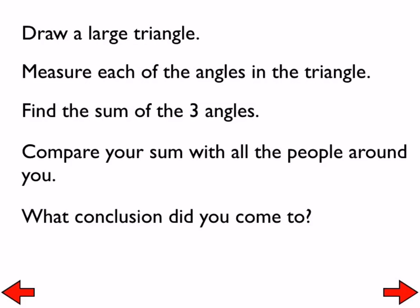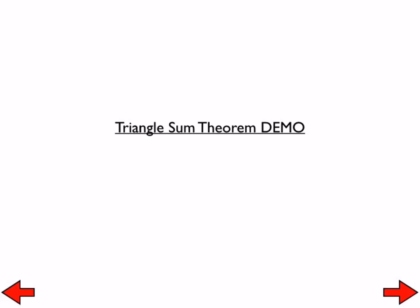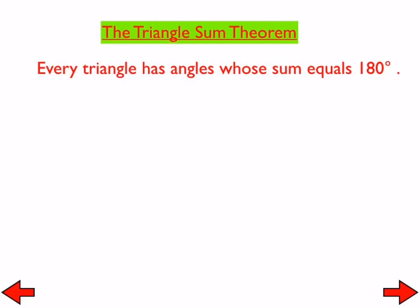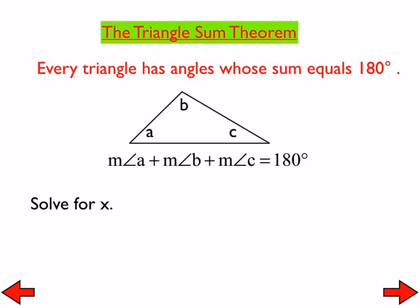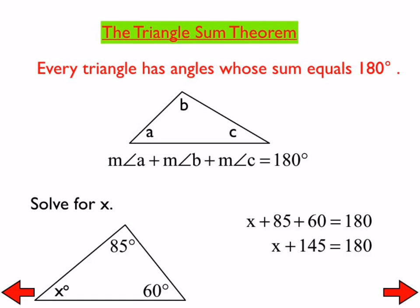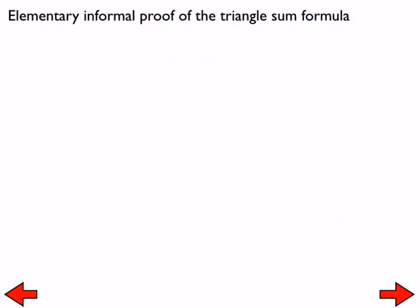So as we've compared, the conclusion that we come to, of course, is the fact that all three angles add up to 180 degrees. And so this is called the triangle sum theorem. And the triangle sum theorem states that every triangle has angles whose sum equals 180 degrees. So in other words, if we know two of the angles in any triangle, we can easily find the third one by adding the two together and then taking that away from 180 using the triangle sum theorem. Now, before you go on to trying other problems, let me show you an elementary informal proof of why it's 180.